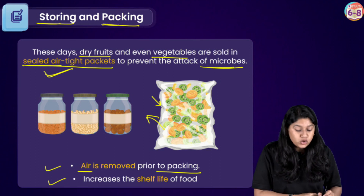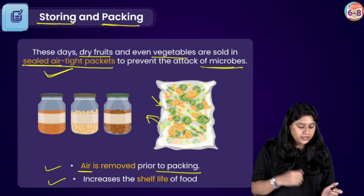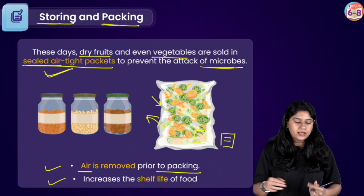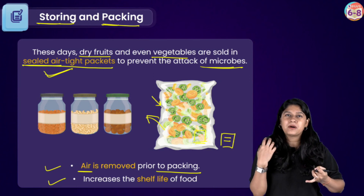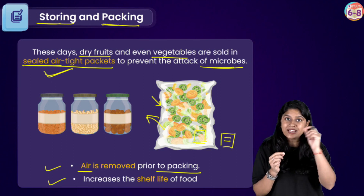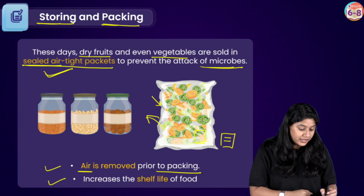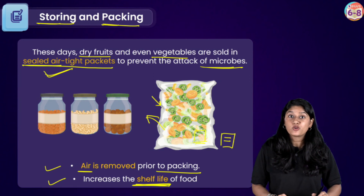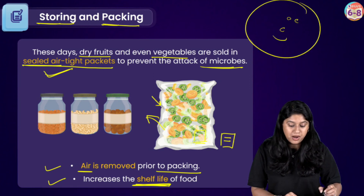Apart from preventing the attack of microorganisms, airtight packaging also helps in increasing the shelf life of the food. That is why if you go to any supermarket and pick a product, at the back of it you will be able to see the expiry date — on bottles of pickles, packets of chips, dal, etc. So they are increasing the shelf life of the food.